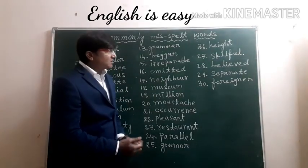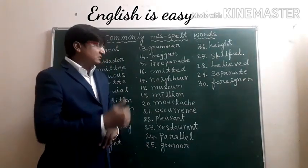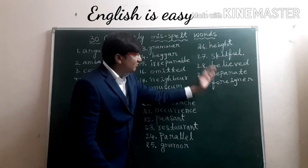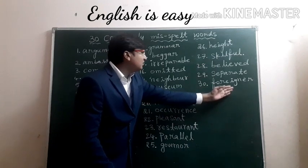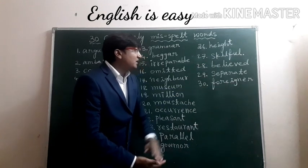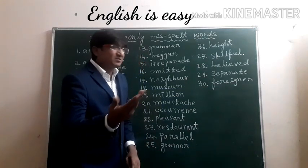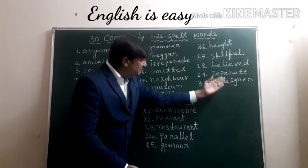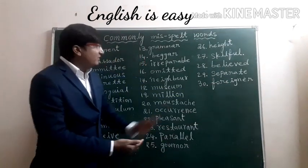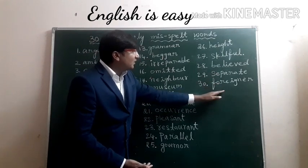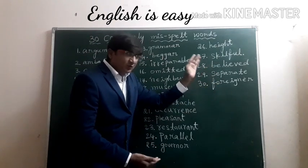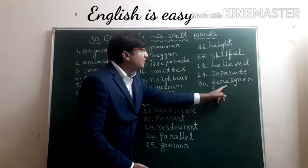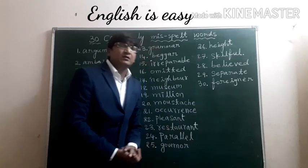Thirtieth and last one: Foreign. We will miss the letter G, and some students also won't write I. So remember, the correct spelling is F-O-R-E-I-G-N. We are supposed to write this word like this — F-O-R-E-I-G-N.